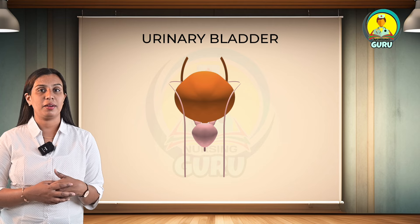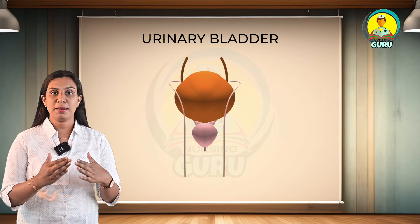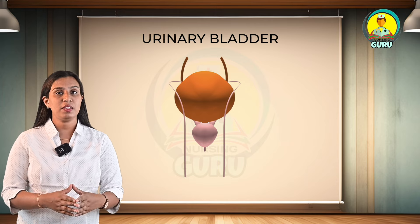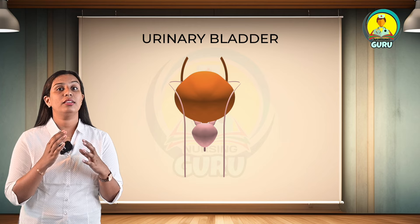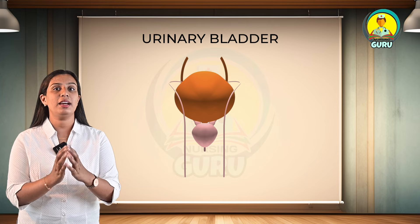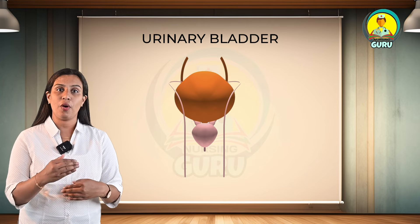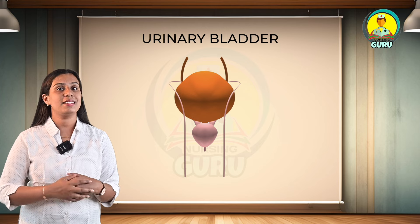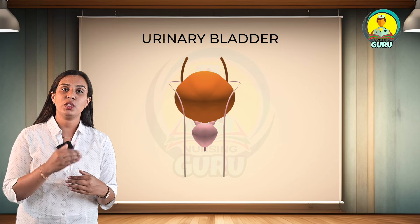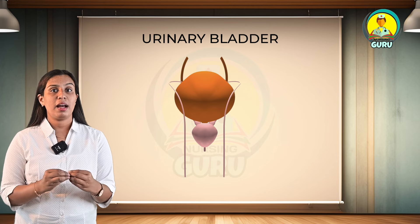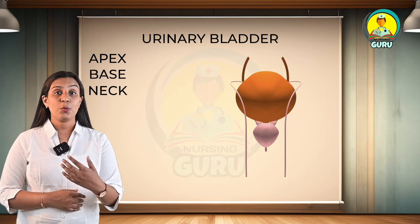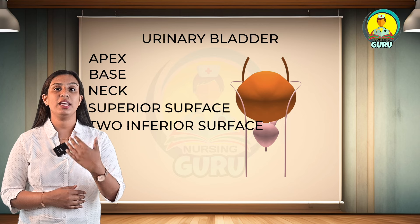The urinary bladder is situated immediately behind the pubic bones within the pelvis. The empty bladder is 5 to 7.5 cm long, while the full bladder is about 12.5 cm long and holds about 500 ml of urine, though it is capable of holding more than twice that amount. It is a smooth, collapsible muscular sac that stores urine temporarily. The empty bladder is pyramidal, having an apex, base, neck, superior surface, and two inferior surfaces.